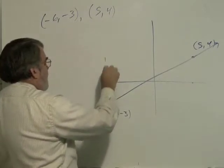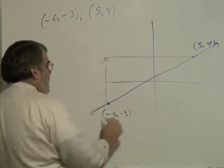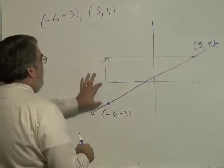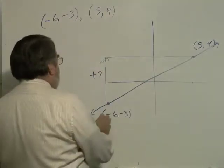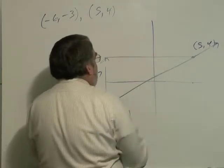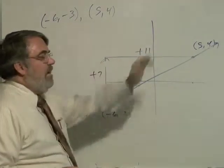Let's find the slope and travel from left to right. I go from minus 3 up to positive 4, so that's 3 plus 4 is 7. I go up 7 units. Then I travel from minus 6 over to positive 5, so that's 6 plus 5 is 11. Up 7, right 11.